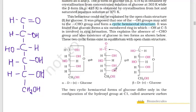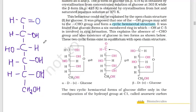Carbon number five is bonded to the aldehyde group through bond formation — this is a linkage involving the aldehyde group. Now we're talking about the alpha and beta forms. Carbon number one and carbon number five are involved in this linkage.